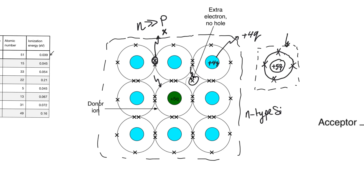If you look at this, the donor box has a net charge — a net positive charge of plus Q. It has four electrons and a plus 5 in the inner circle, so it has a plus Q net charge. So there is still net electrical neutrality. The freed electron left behind a positive ion, which is why we call the energy necessary to free that electron ionization energy. The electron leaves behind a positive ion, and overall the entire material is still electrically neutral.